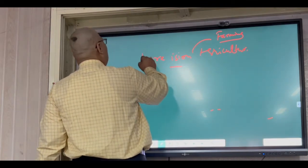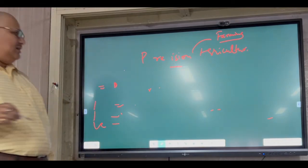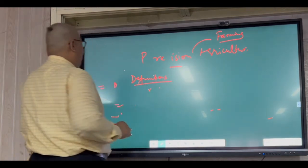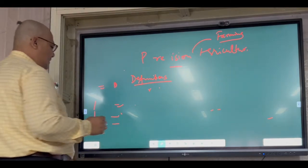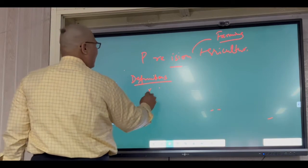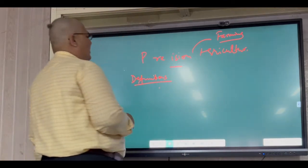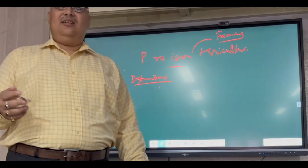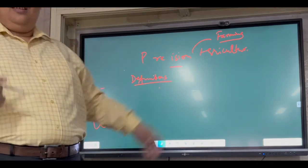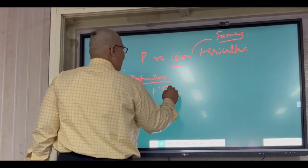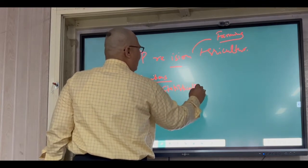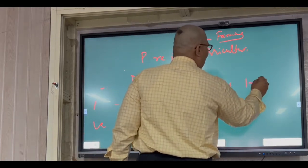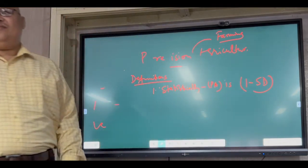Now we come to definitions of precision agriculture. We have started this with statistics. So the first definition we write statistically. Statistically, precision agriculture is 1 minus S.